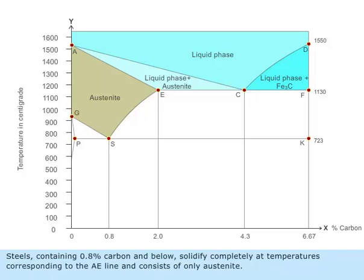Steels containing 0.8 percentage carbon and below solidify completely at temperatures corresponding to the AE line and consists of only austenite.